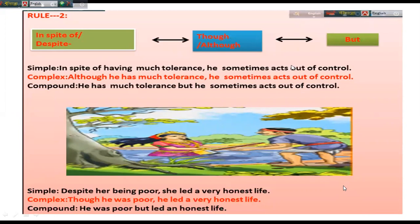If you get 'in spite of' or 'despite,' how can you change it into complex and compound? 'In spite of having much tolerance, he sometimes acts out of control.' To make it complex, the phrase is changed into a clause: 'Although he has much tolerance, he sometimes acts out of control.' Here 'although he has much tolerance' is the subordinate clause and 'he sometimes acts out of control' is the independent clause. For compound: 'He has much tolerance, but he sometimes acts out of control.' So for 'in spite of' or 'despite,' use 'though' or 'although' to make it complex, and use 'but' to make it compound.